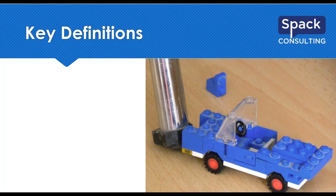Shifting now to key definitions — let's make sure we're all on the same page. The first term is crash. What do we mean by crash? It's simply a collision. It could be between vehicles, could involve pedestrians, bicycles, any member of the traveling public. Basically there's an impact that has happened and it has been reported — usually through the police or other methods — and it gets recorded down as an incident that has happened at a location.